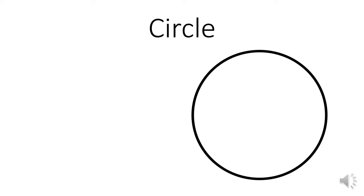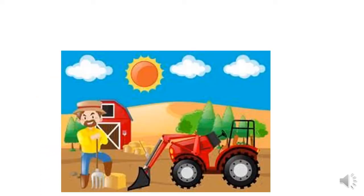This is a circle. Now here's a picture and I want you to help me find some items that have a circle shape. Can you help me? The first item here that is the same as a circle shape is the Sun. We also have the wheels of the tractor — there are two wheels here in a circle shape.